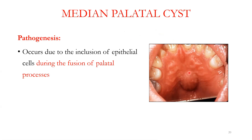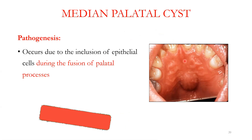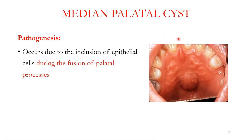Let's discuss the median palatine cyst. The anterior palate or premaxilla is formed by the fusion of the maxillary process with the median nasal process and the frontal nasal process, giving rise to the premaxilla or anterior palate, the upper lip, as well as the philtrum of the upper lip. The posterior palate is formed by the fusion of the palatal shelves.